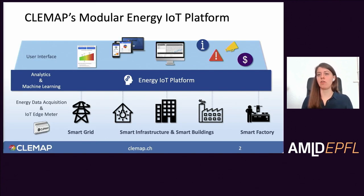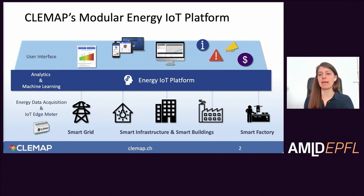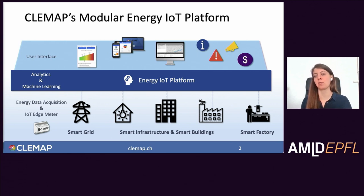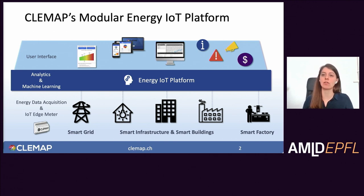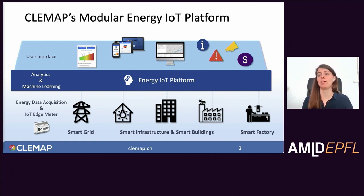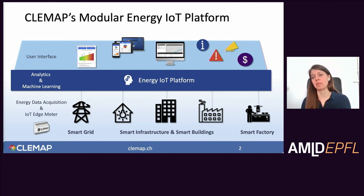To give you a bit of an overview of our company before I dive into the machine learning: we have specific IoT edge meters that measure power data at high frequency, and we have applications for smart grid which includes EV charging stations and micro grids. We have smart infrastructure and smart buildings for small to medium enterprises and also for homes, and then we have a smart factory which includes production lines. Our energy IoT platform collects data not only from our sensors but also from other sensors, and we have data analytics modules that run on our IoT platform. We also have user interfaces including online dashboards, applications, and email modules that provide our customers with energy analytics data.